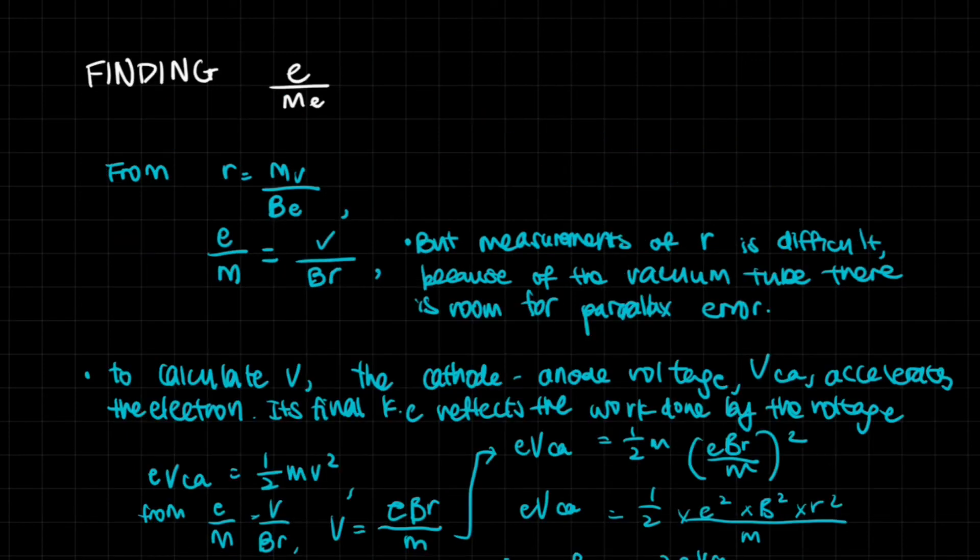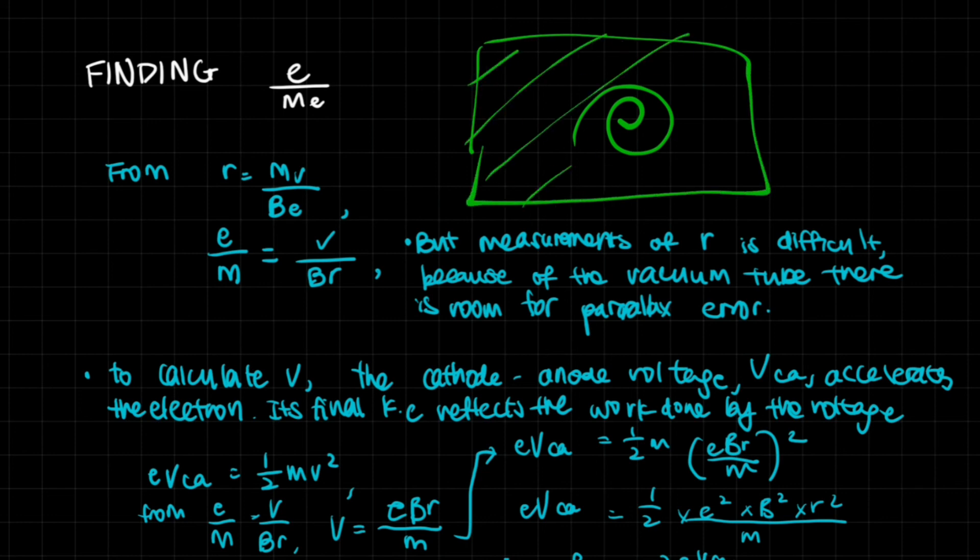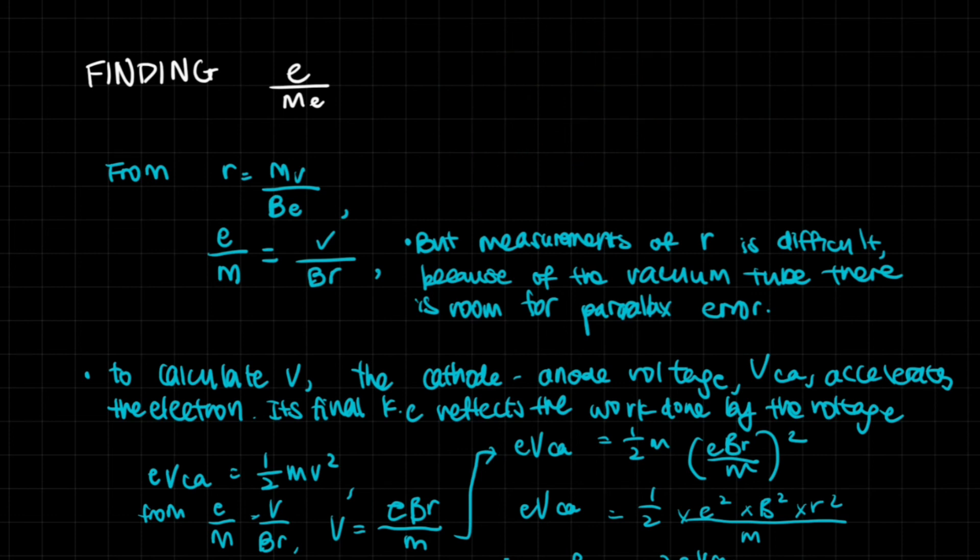Now we'll do calculation work to find the charge to mass ratio, which was very helpful back in the day. We have the equation R = MV/BE. We can rearrange to get E/M = V/BR. To get this ratio, we need the velocity, magnetic flux density, and radius. Measurements of the radius are very difficult because in the vacuum tube there's room for parallax error. If you're trying to get the radius of this spiral inside a tube or hydrogen chamber, there's glass between it. So even if you measure it with a ruler, there's parallax error. Also, this is a very small track.